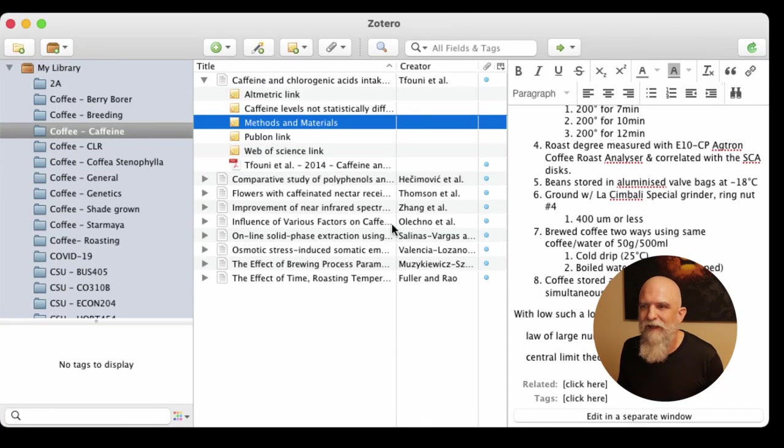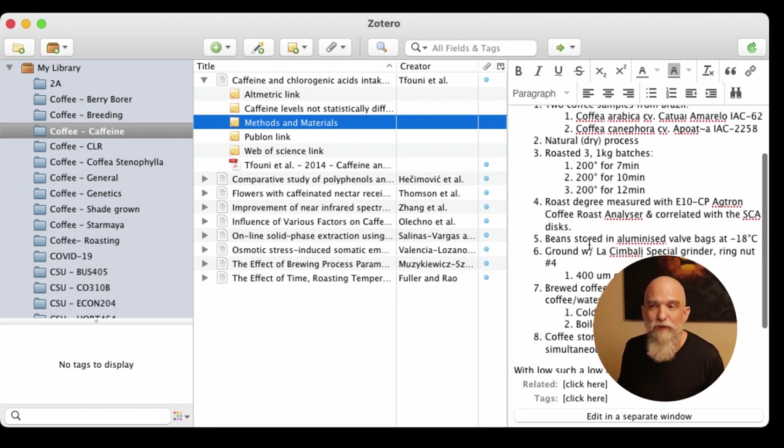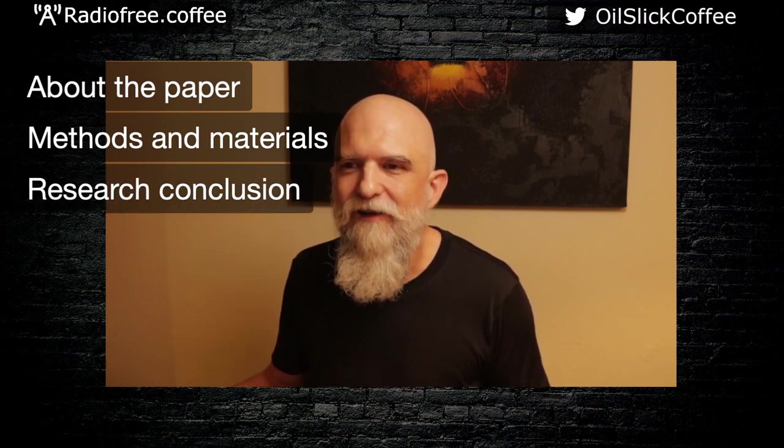These are the things that we as coffee people are interested in is the coffee samples they used, how they roasted them, how they brewed them. So we've talked about the paper. We've talked about the methods and materials.